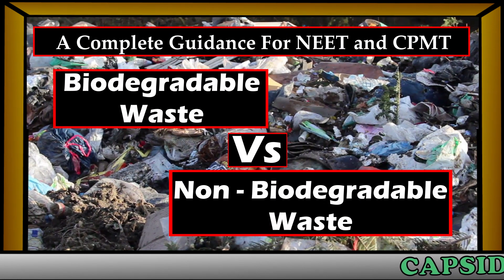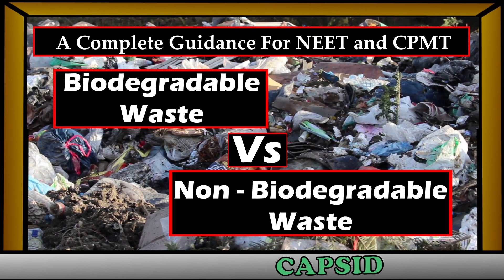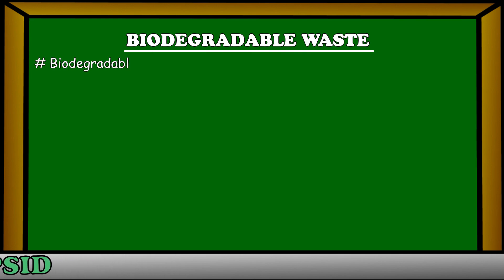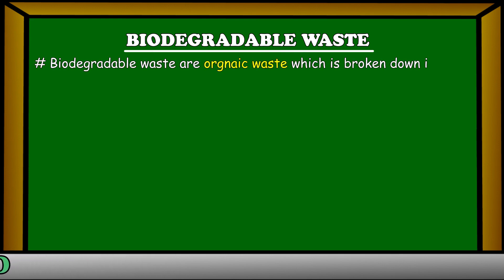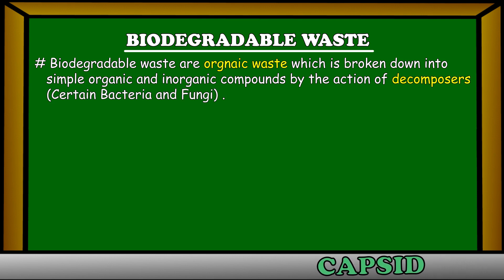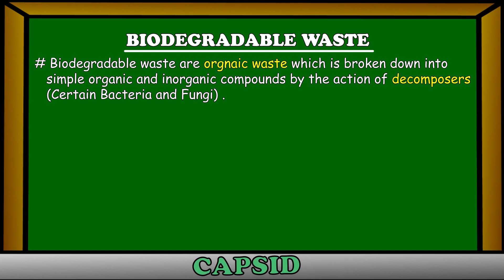Hello friends, today we will discuss the characteristics and differences between biodegradable and non-biodegradable waste. First we will talk about biodegradable waste. Biodegradable waste is organic waste which is broken down into simple organic and inorganic compounds by the action of decomposers, like certain bacteria and fungi.